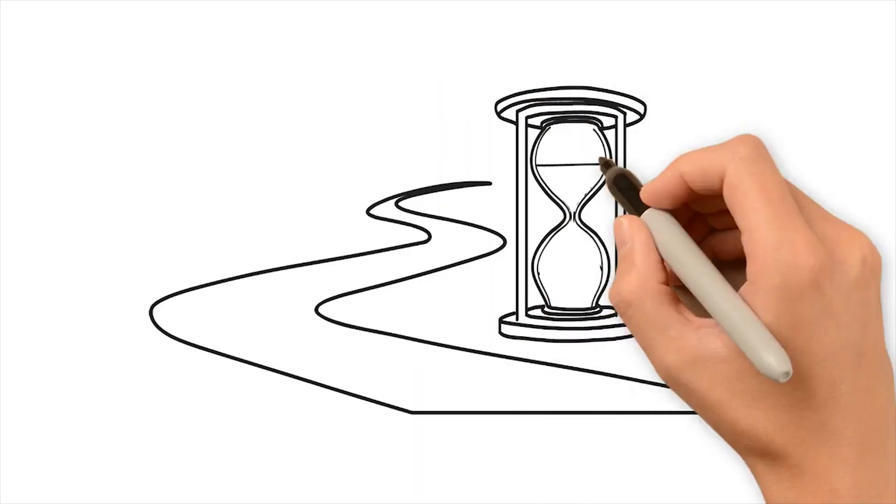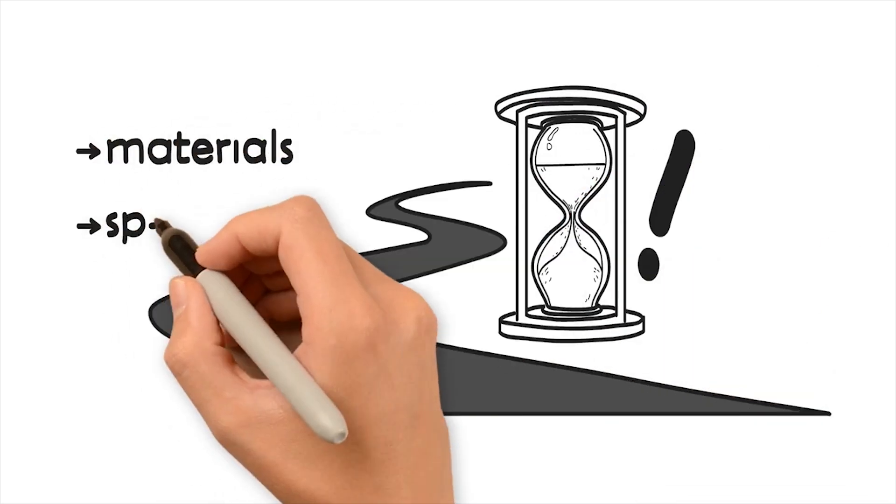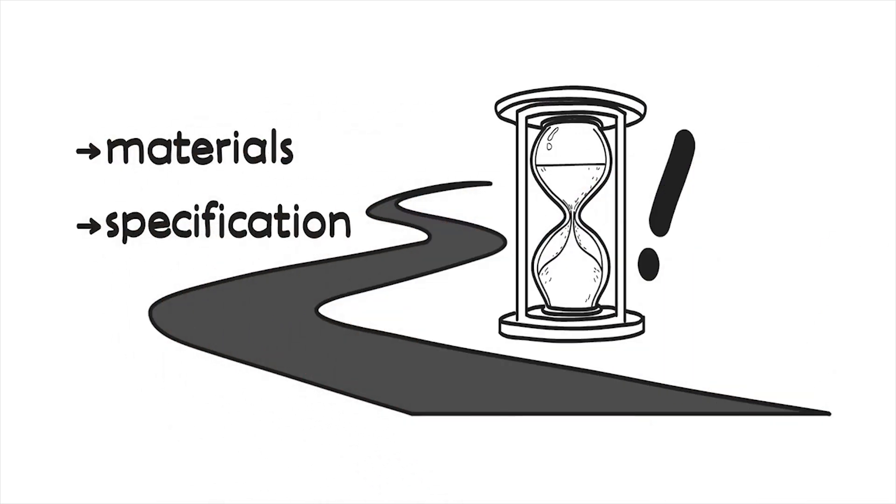The first place to look, an area which is normally missed, is the materials and specification of the road. If the road is underspecified then the lifespan of the surface will be greatly reduced.